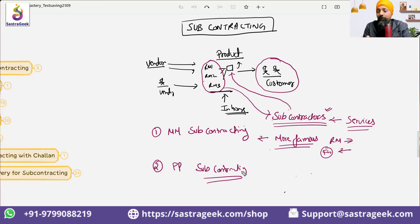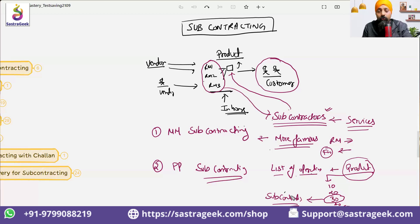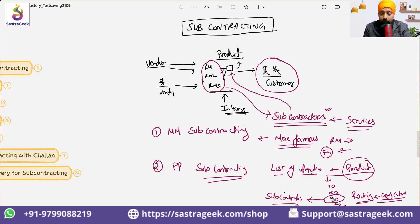In PP subcontracting, the same basic thing happens, but we have a list of operations. For example, if you are producing a product with operations 10, 20, 30, 40, and 50, you might do the subcontracting at operation 30 in between — not subcontracting the full product, but a specific operation within the product. We have a routing concept in PP, and under the routing we have a confirmation control key which can control this process, marking that operation as a subcontracted operation.